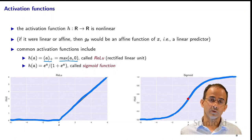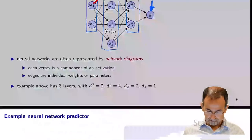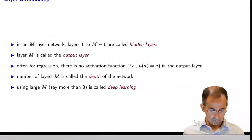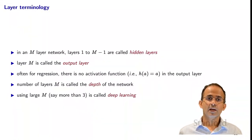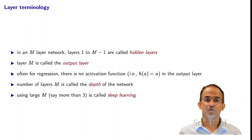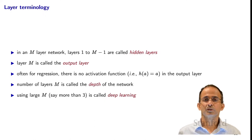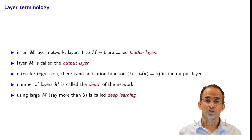Or if we were using ReLU, we'd only be able to predict non-negative values of y-hat. The number of layers M is called the depth of the network. People refer to networks which have a large M — at least three would be typical — as deep learning. For neural networks used for image classification, we may have 15, 20 layers or many more.